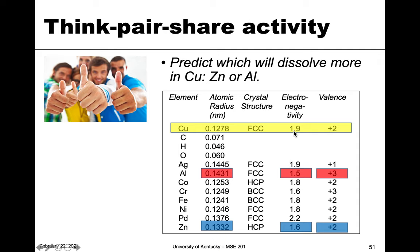For electronegativity, copper is 1.9 — relatively high. Both zinc and aluminum are lower, but zinc is a little bit closer to 1.9, so zinc wins on that one as well. For valence, zinc has the same valence as copper, so zinc checks that criterion too.